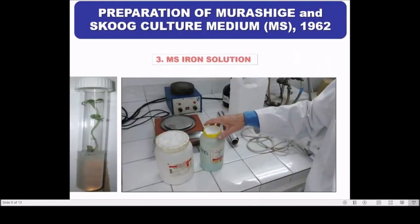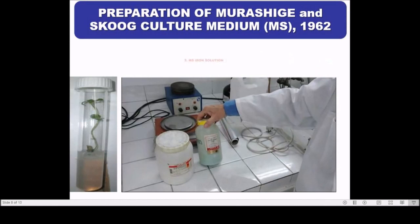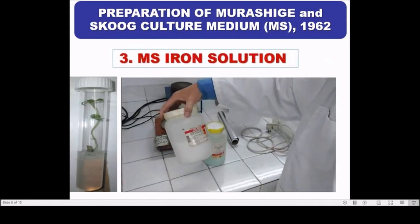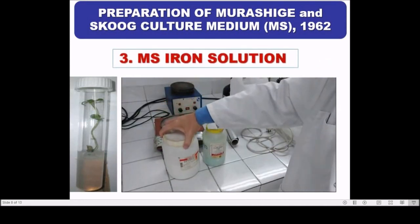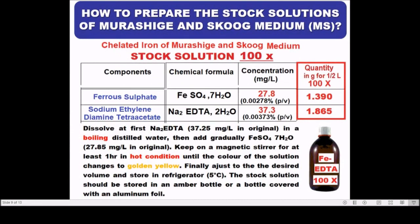Iron solution requires ferrous sulfate and ethylenediamine tetraacetic acid, EDTA. Iron is part of certain enzymes and functions as a respiratory electron carrier through compounds such as cytochromes and oxidative enzymes, peroxidases and catalase. For the iron solution, we can prepare a 100X stock solution.